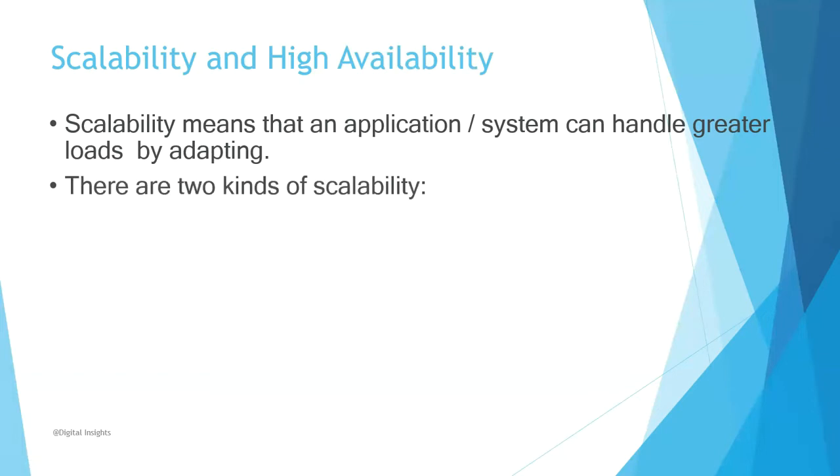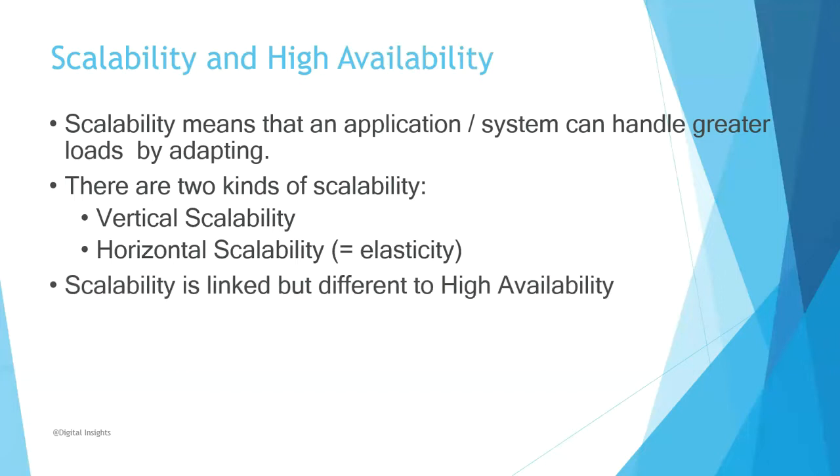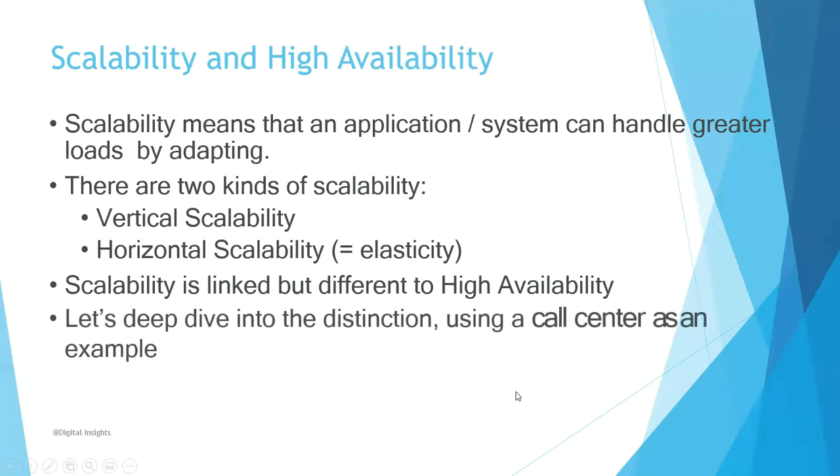There are two kinds of scalability: vertical scalability and horizontal scalability or elasticity. Vertical scalability is linked but basically different from high availability, so you should understand the difference between both high availability and scalability. Once we complete this section, I hope you will be clear on this topic. Let's dive deep into the discussion.